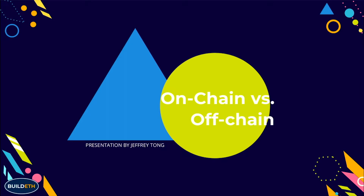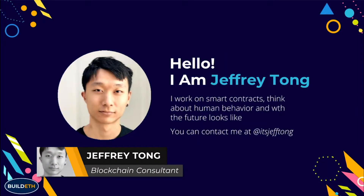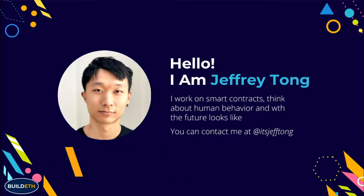So this actually ties in very well with Matt's talk just now about on-chain versus off-chain architecture. This kind of helps solve the UX issues and mentions some points he talked about. I'm Jeffrey, a blockchain consultant. I work on a lot of smart contract stuff, so I spend my time thinking about how to architect it, how to improve the UX and UI, and also what the future of the entire crypto space will look like.